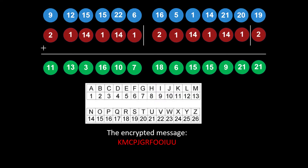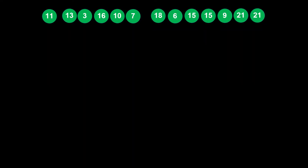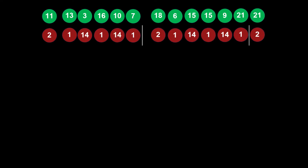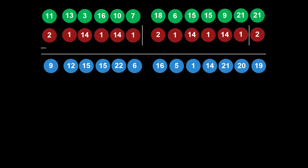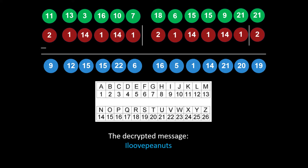To decrypt: we take the encrypted message and convert it back to numbers. We write out our secret key "banana" again and subtract each element, still in mod 26. For example, the first becomes 11 minus 2 equals 9; then 13 minus 1 equals 12; then 3 minus 14 equals minus 11, which is 15 in mod 26. Mapping those numbers back gives us "I love peanuts" — the original message.